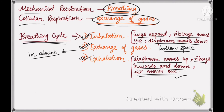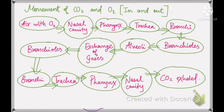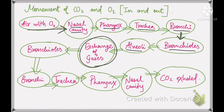Here is a chart showing the movement of oxygen and CO2 inside and outside. Oxygen-rich air from the environment enters the nasal cavity, then moves to the pharynx, then trachea, then splits into bronchi, bronchioles, and finally alveoli, where exchange of gases takes place. After exchange, the CO2-rich air moves back through bronchioles, bronchi, trachea, pharynx, nasal cavity, and is exhaled out.